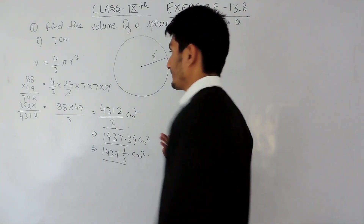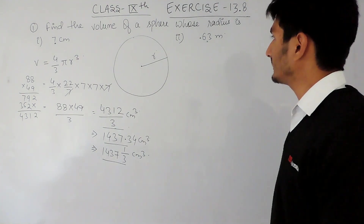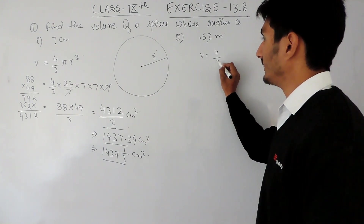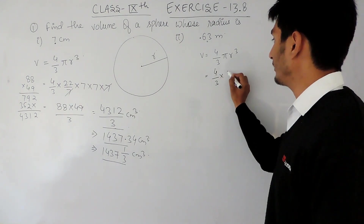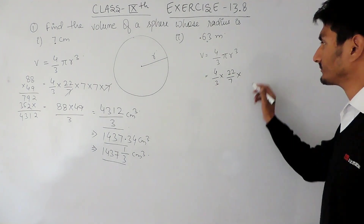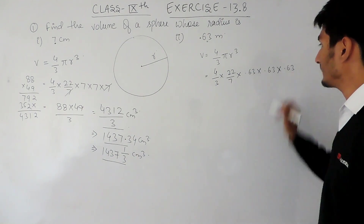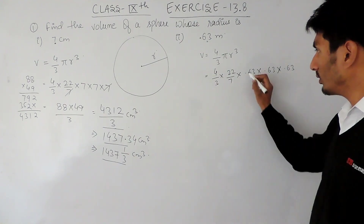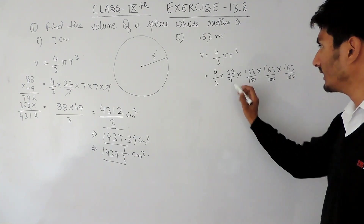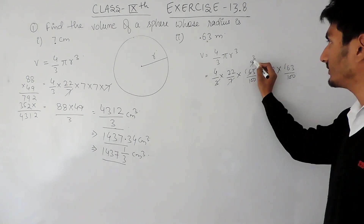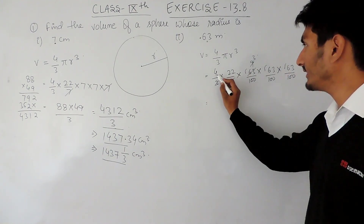Now for the second part, we have to find the volume where the radius is 0.63 meters. The volume will again be 4/3 π r³. So it will be 4/3 × 22/7 × (0.63)³, which is 0.63 × 0.63 × 0.63. I can remove the decimals and place zeros in the denominator. After cancellation it will be 9 times, and multiplying 4 × 3 = 12, and 12 × 24.